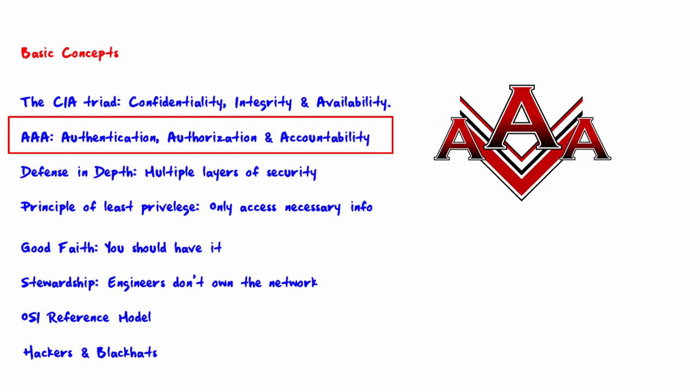Authorization means the actions that it is possible to perform once you've been authenticated. Usually, this defines what files you can read, write, or modify. And the third concept is accountability, which holds users accountable for their actions on the system. It's usually done with logging and auditing.